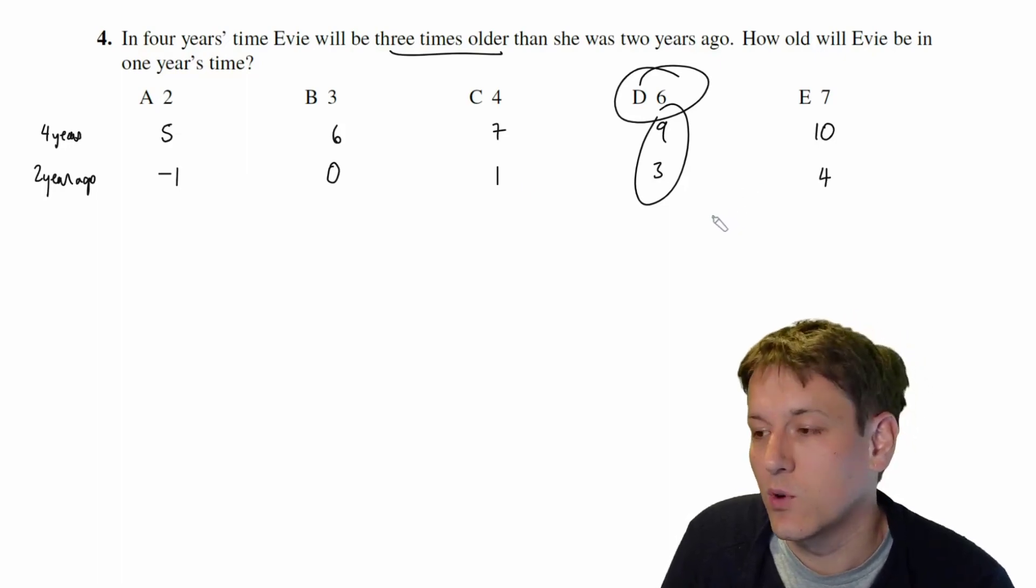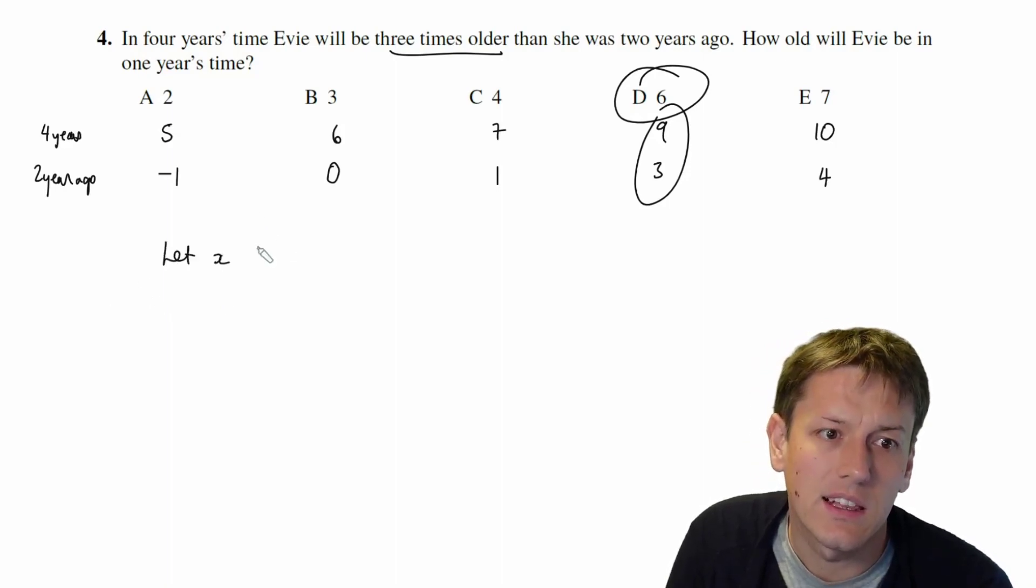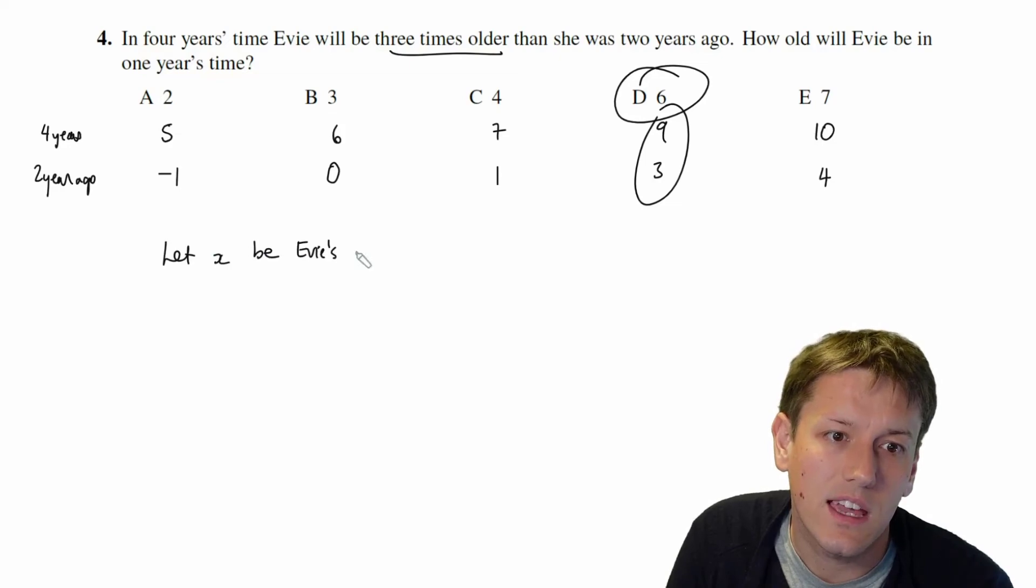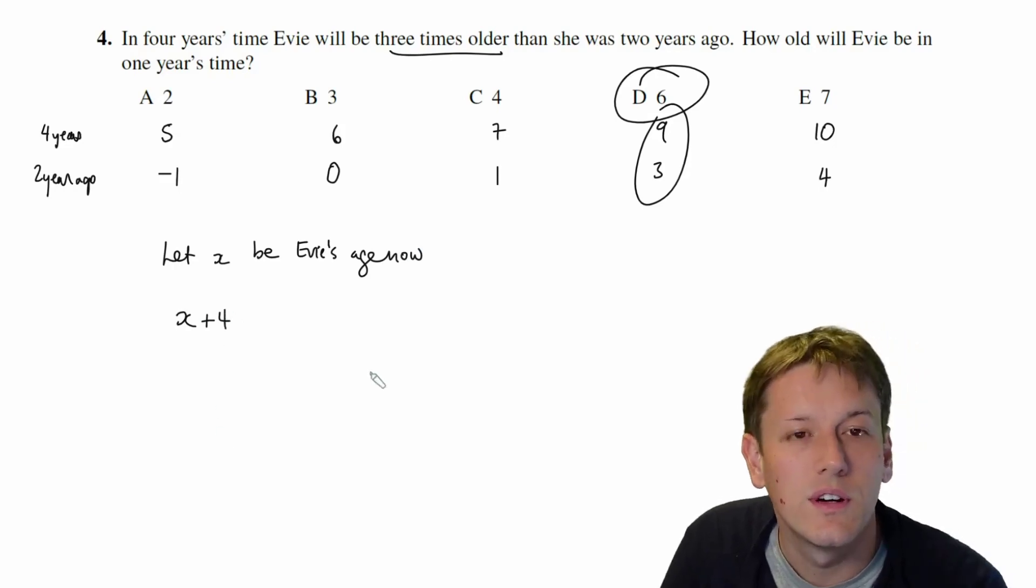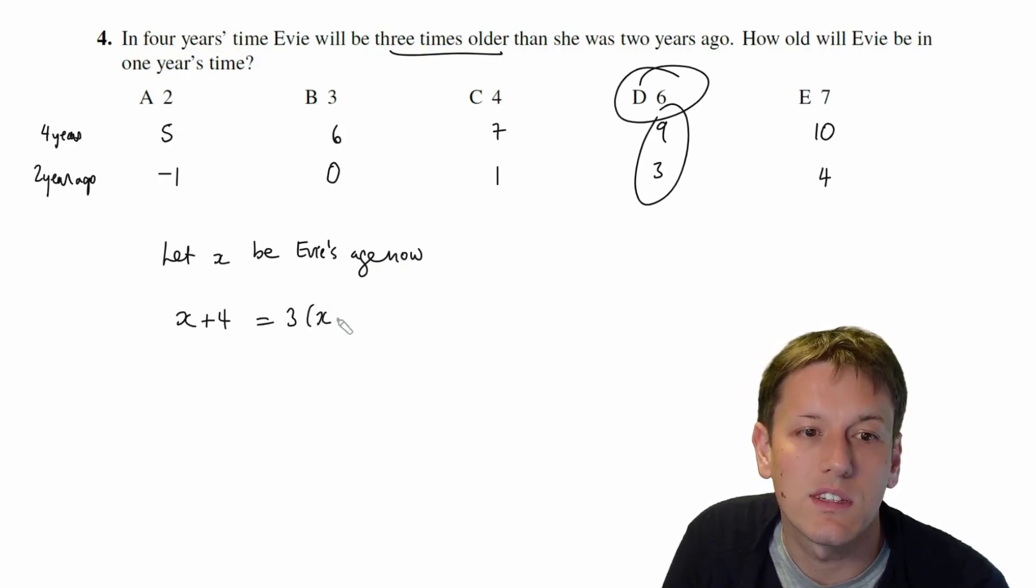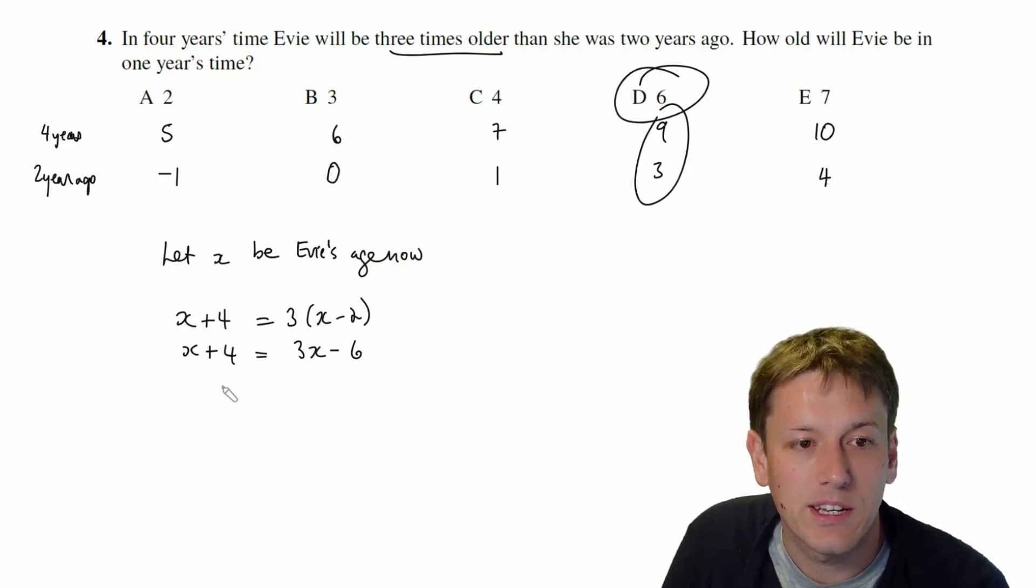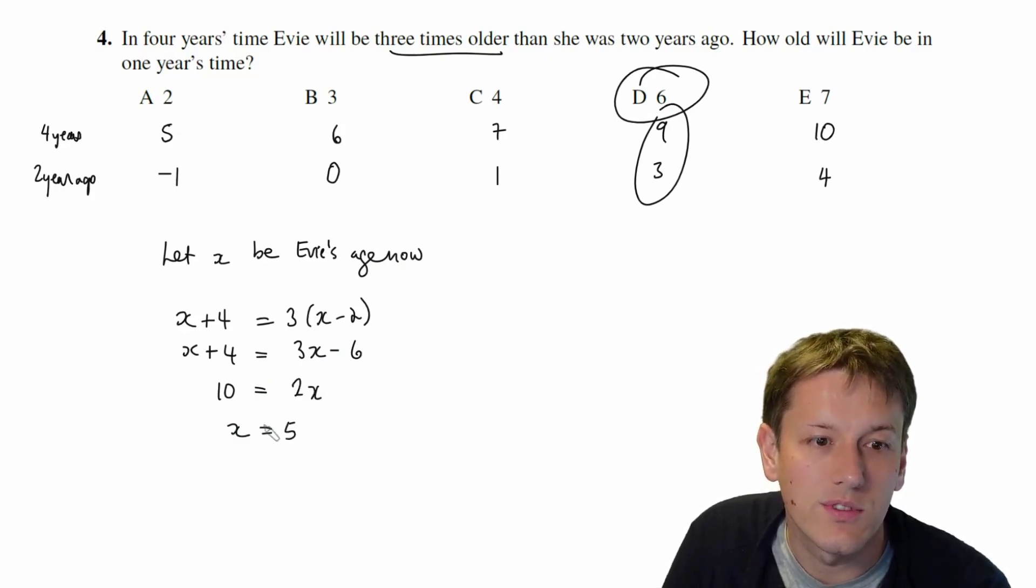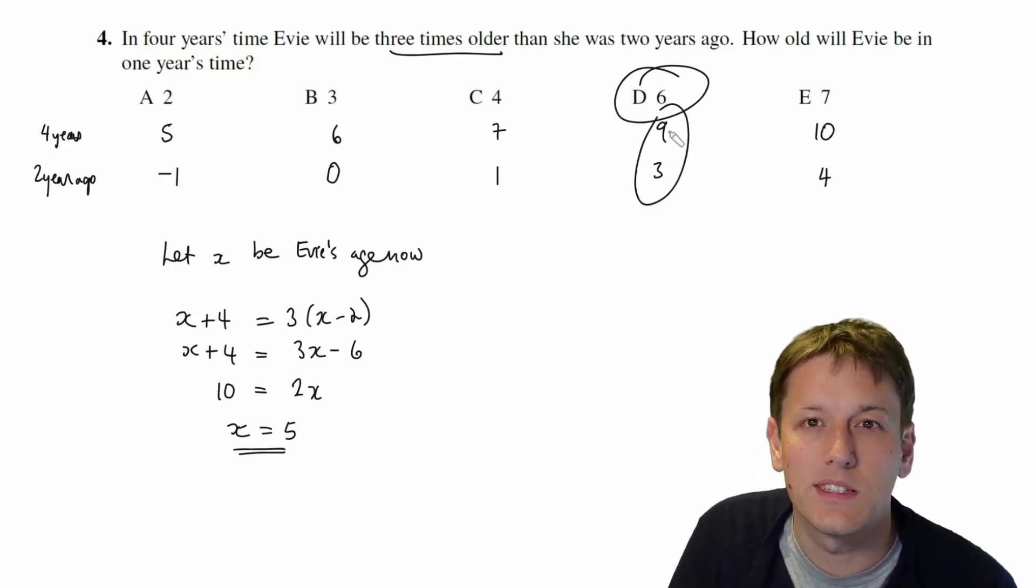Now of course if it wasn't a multiple choice question or if you just like doing these things directly, you could also write this down algebraically. So we could say let x be Evie's age now, then in four years time she would be x + 4, and x + 4 needs to be three times how old she was two years ago, so that needs to be three times (x - 2), which would be her age two years ago. So we could also solve the equation x + 4 = 3x - 6, multiplying out the brackets here. So that gives us 10 = 2x, and so x = 5.